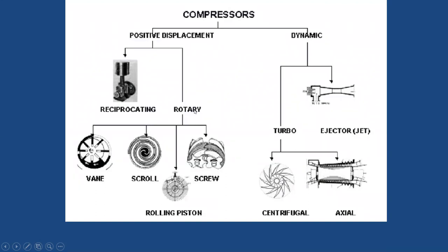In rotodynamic compressors, also called non-positive displacement compressors, there are two types: turbo compressors and ejector-based compressors. The ejector, also called a thermocompressor, falls in the non-positive displacement category because compression happens in the diffuser section. It also serves as a refrigerant compressor, as discussed in detail in the previous unit.